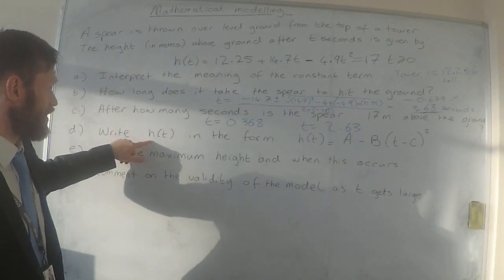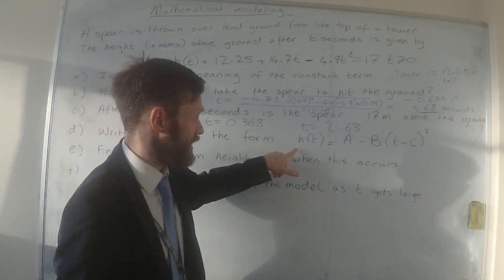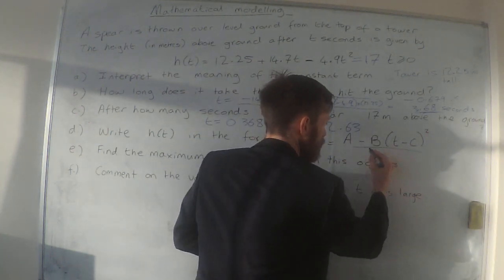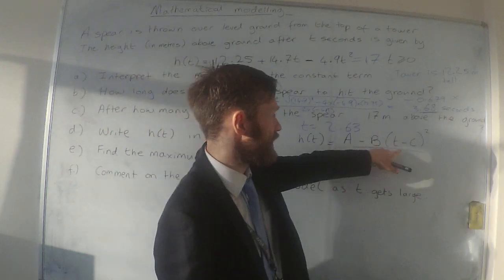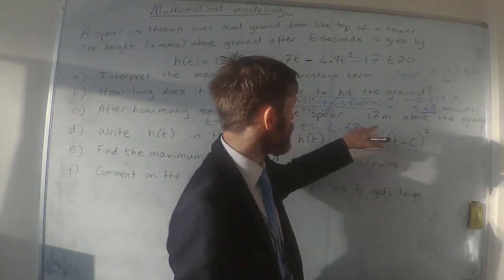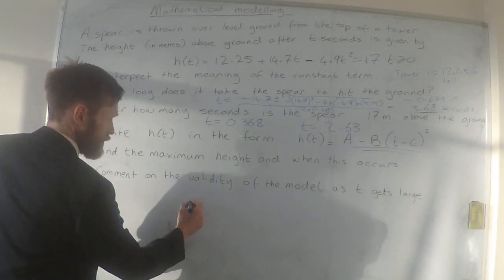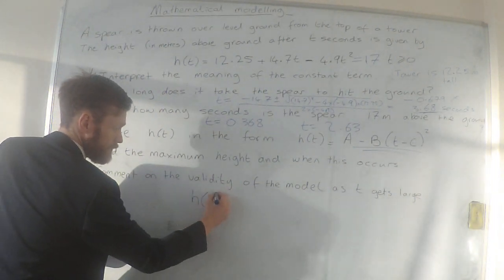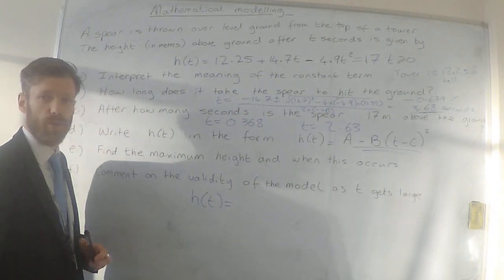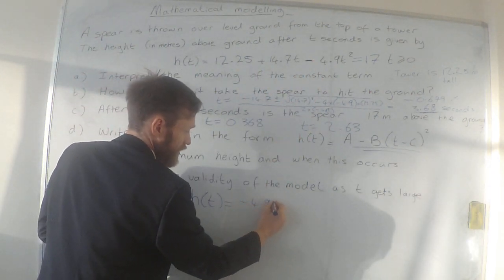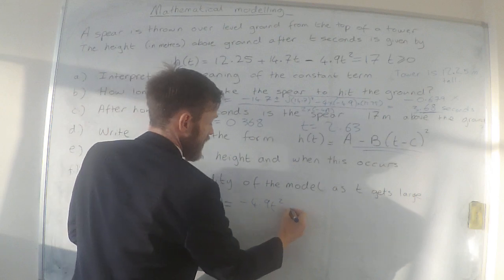Part D: Write h(t) in this form. This form should be familiar to you, it's in the completed square form. So it wants us to complete the square on this. So I'm going to do that down here. The first thing I want to do is write it in the correct order with the t² term at the front.